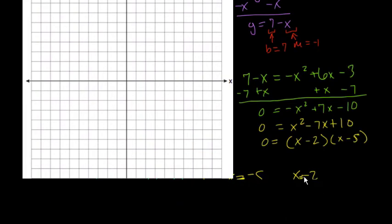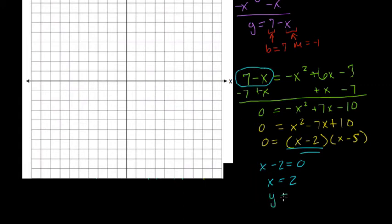Let me clear this off. So then x minus 2 could equal 0. If we add 2 to both sides x equals 2. And we know they meet at a point where x equals 2. If we plug in 2 to our linear equation 7 minus x it's just 7 minus 2 and y equals 5. So they meet at the point 2, 5.